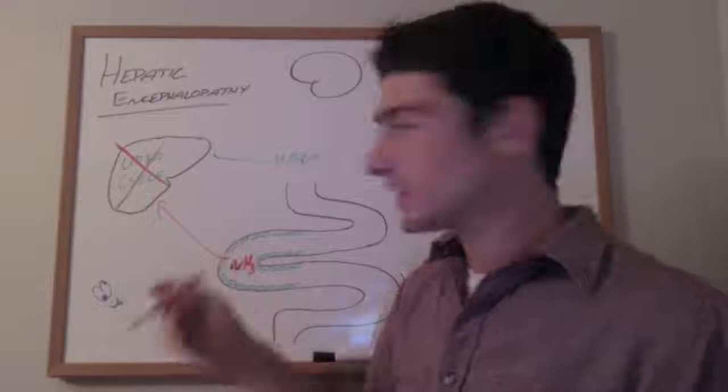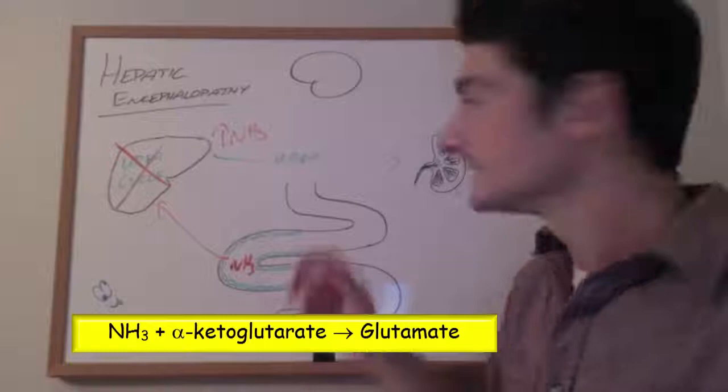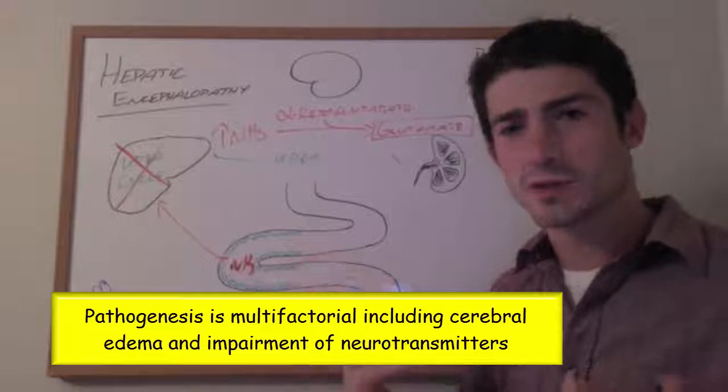That ammonia goes into circulation and crosses the blood-brain barrier where it combines with alpha-ketoglutarate to form glutamate. The glutamate in astrocytes then increases the oncotic pressure, which then pulls water into those cells causing cerebral edema.